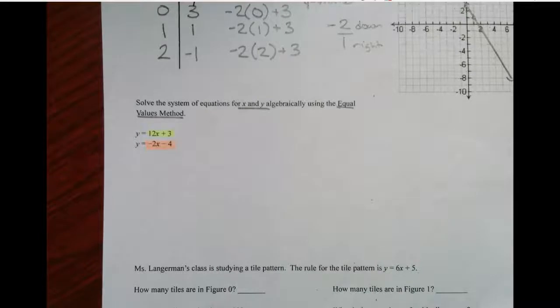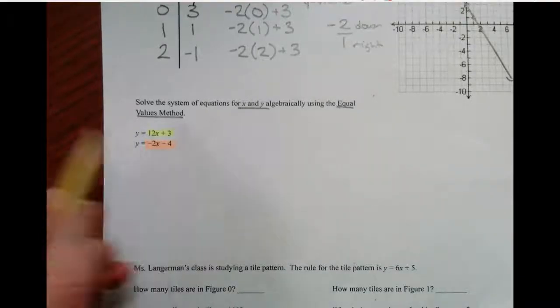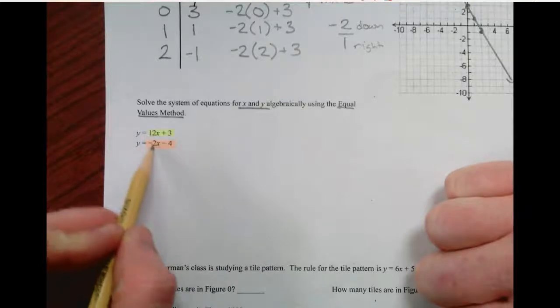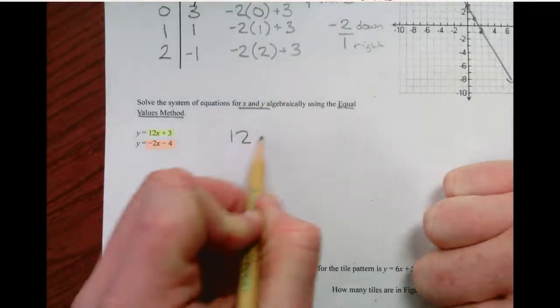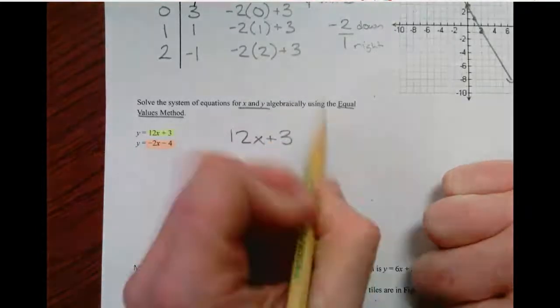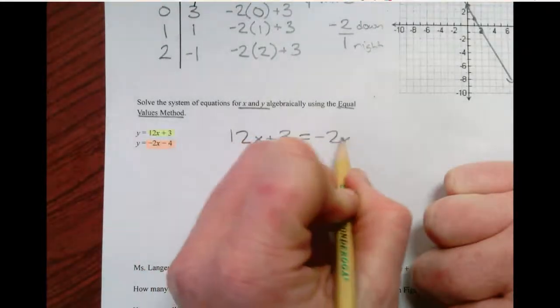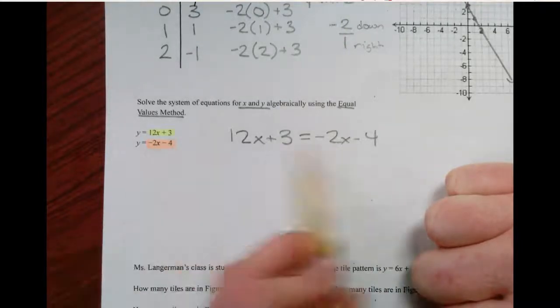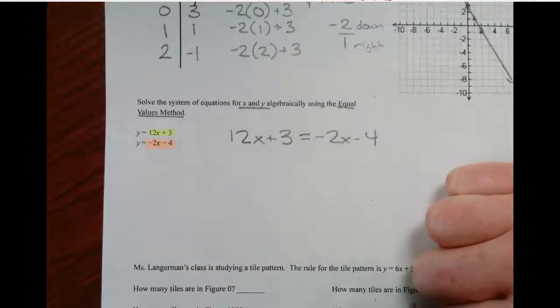Well, if y is equal to, y has to be equal to itself, right? y is the same thing as y. So I can just set these equal to each other. 12x plus 3 equal to negative 2x minus 4. Equal values method, meaning if the y's are equal, we can set the expressions equal.